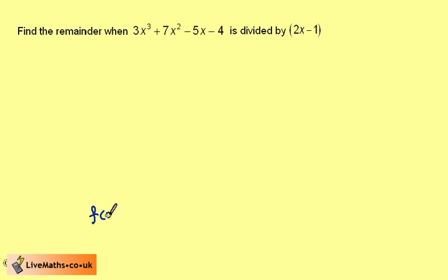As we've discussed previously, if we call this f of x, we should be able to write this as 2x minus 1 times a quotient, add a remainder. This is the same as when we work with numbers.